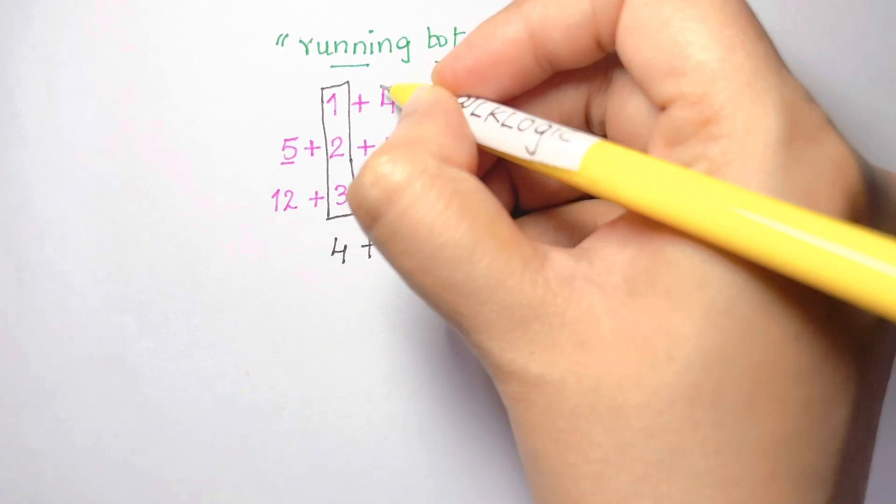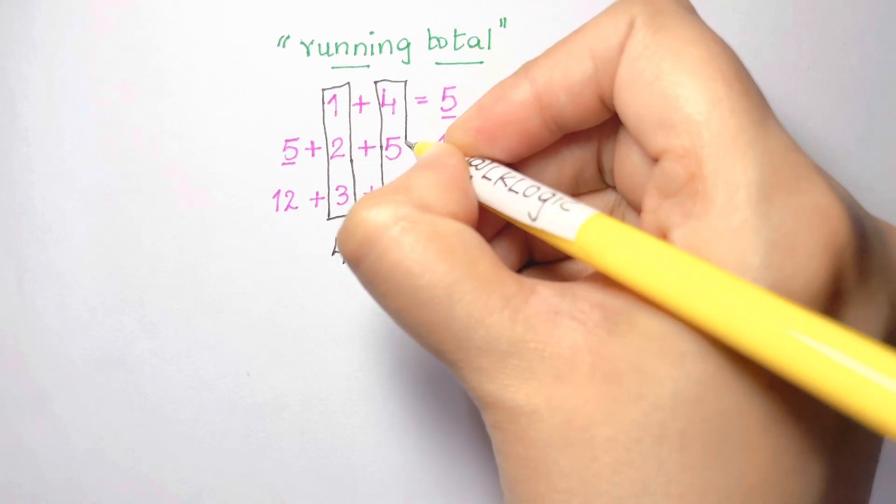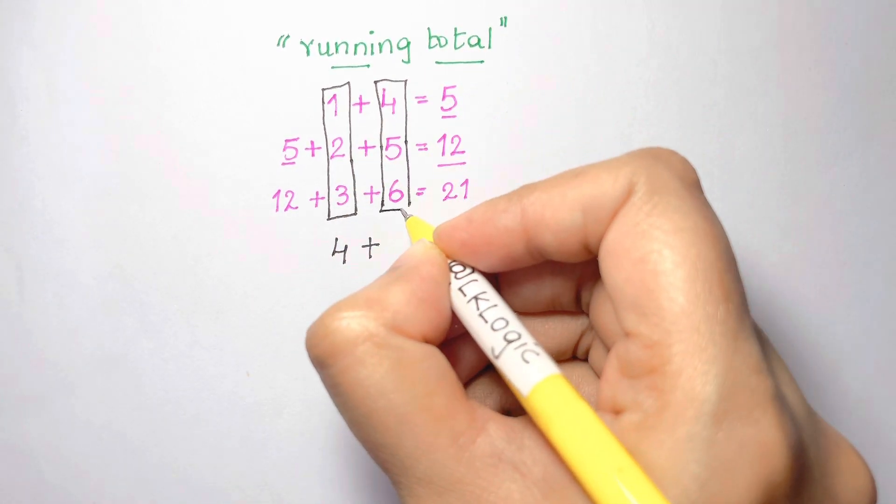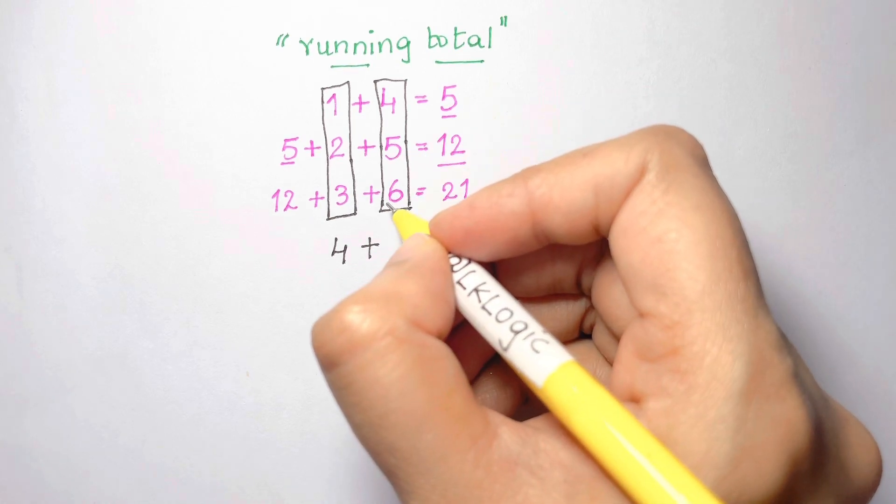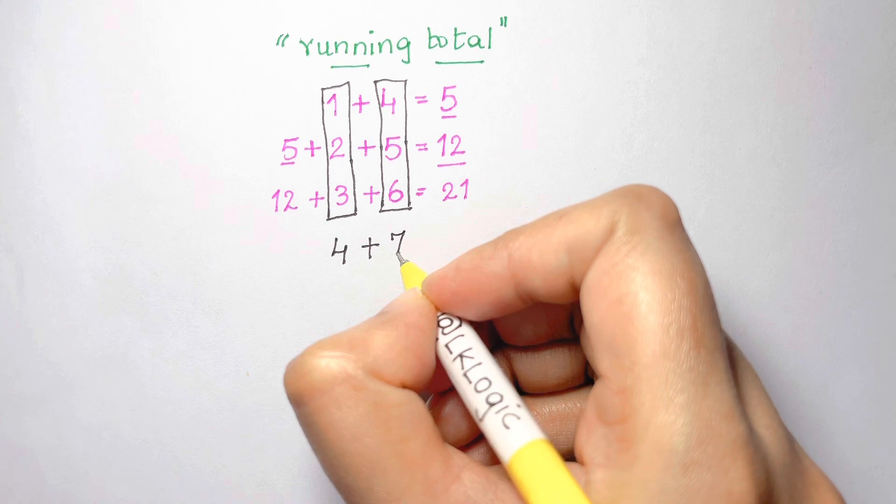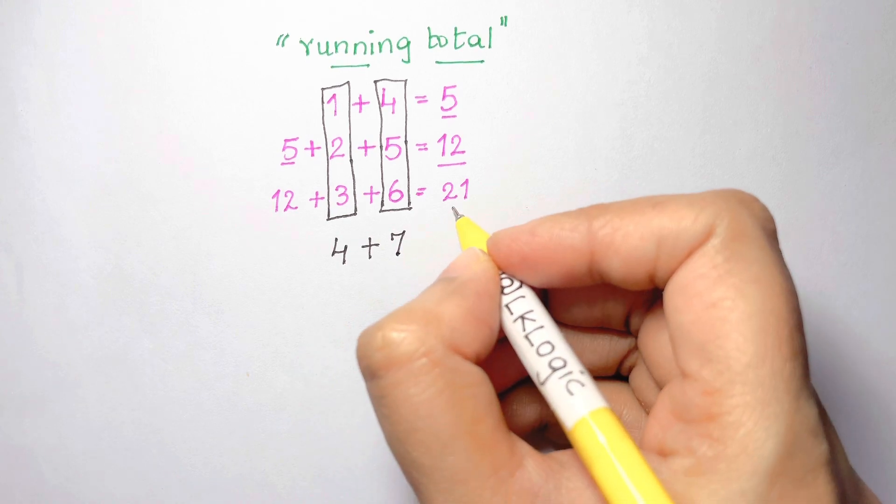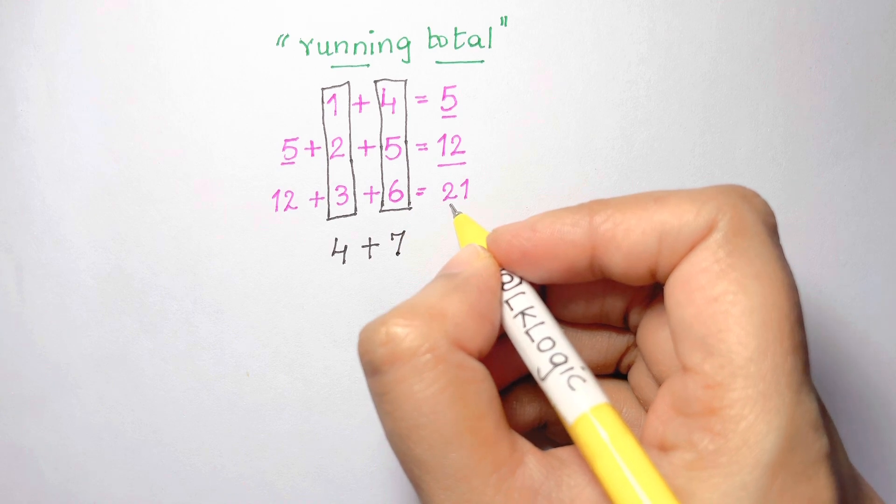If we continue this pattern, we might think that the next number we should be adding is 4. What about the second number? Well we have 4 plus 5 plus 6. Logic should suggest that the next number should be 7. So the next line should be 4 plus 7.